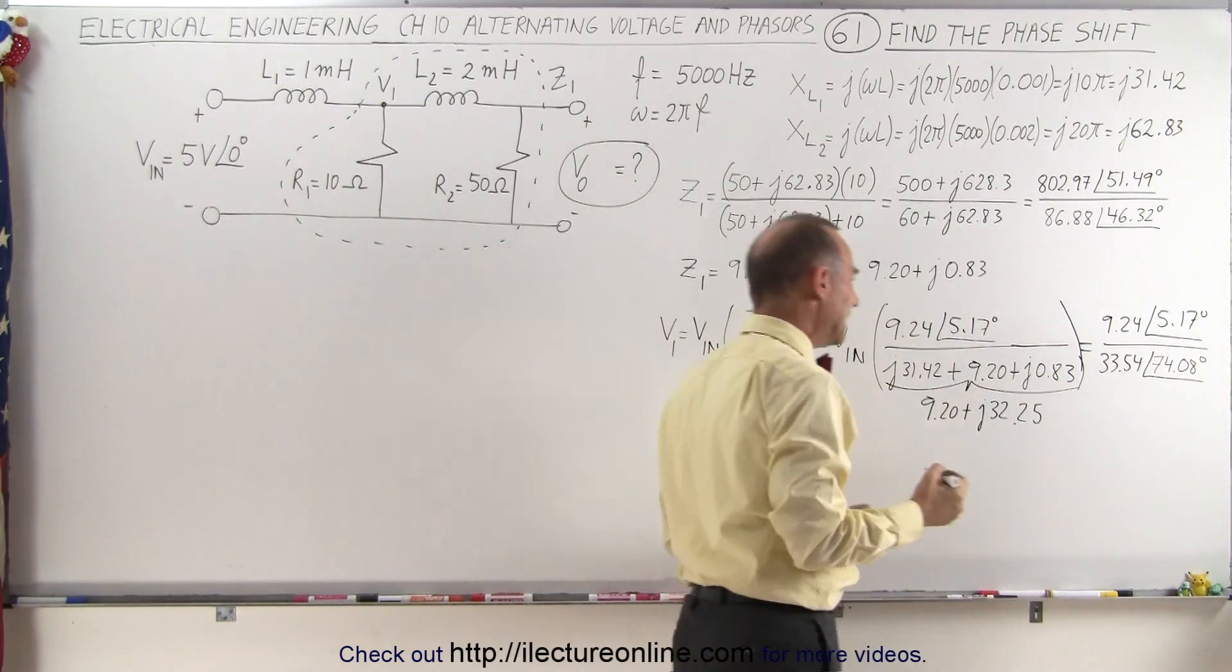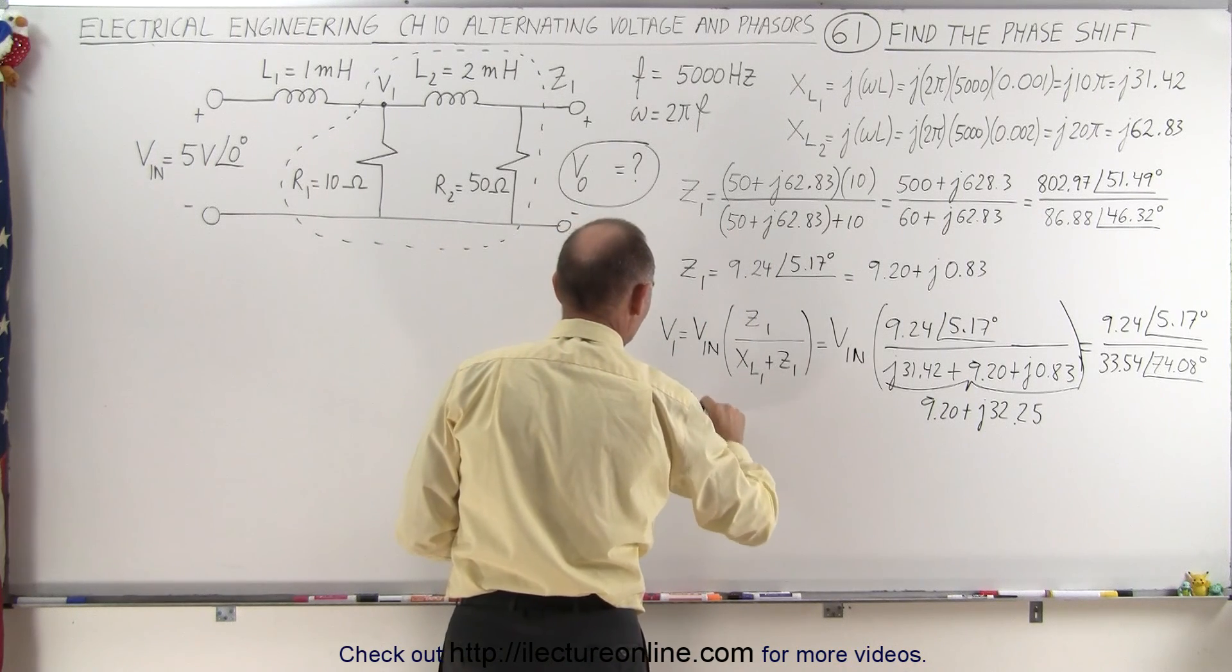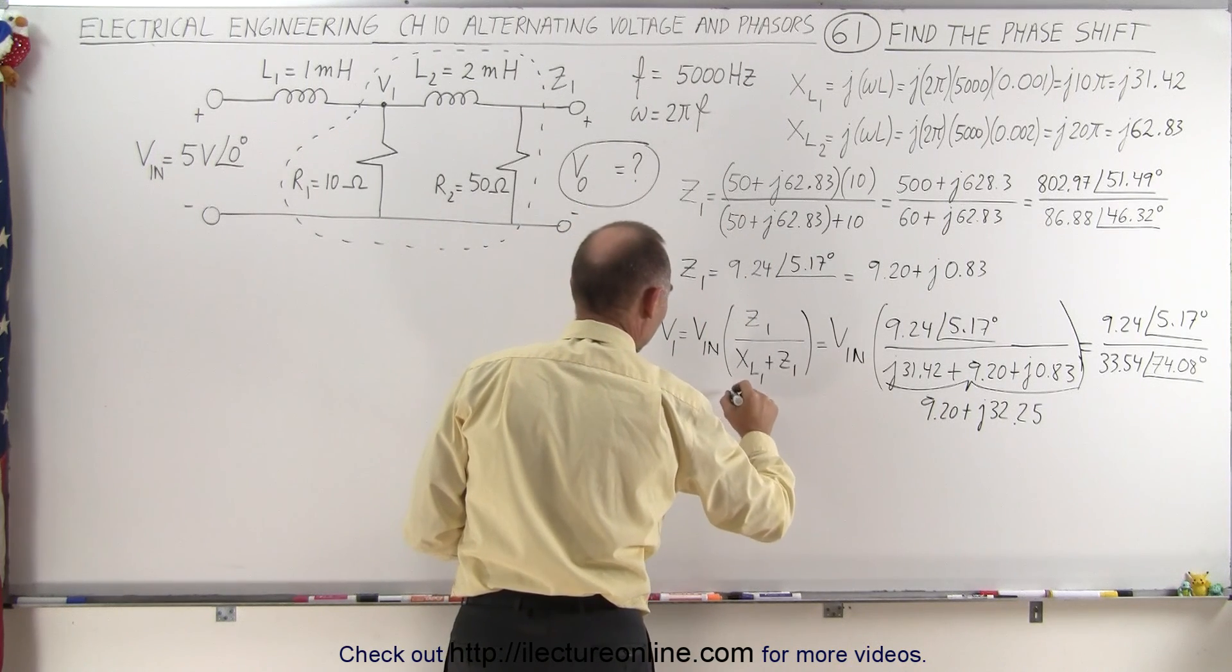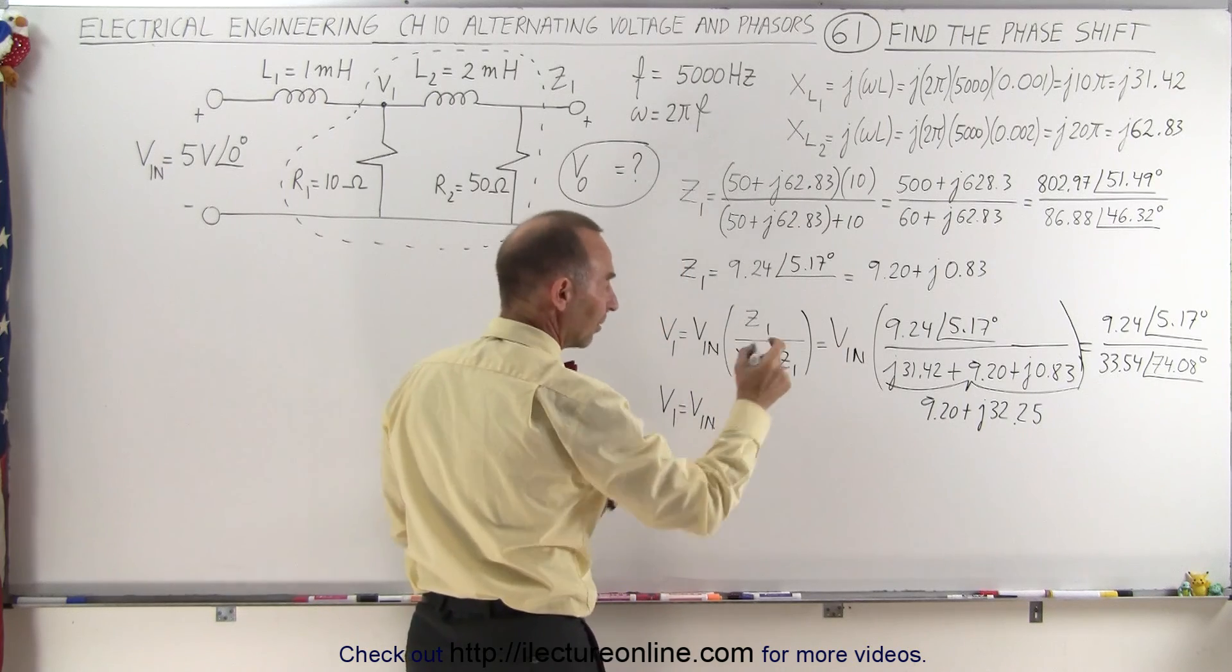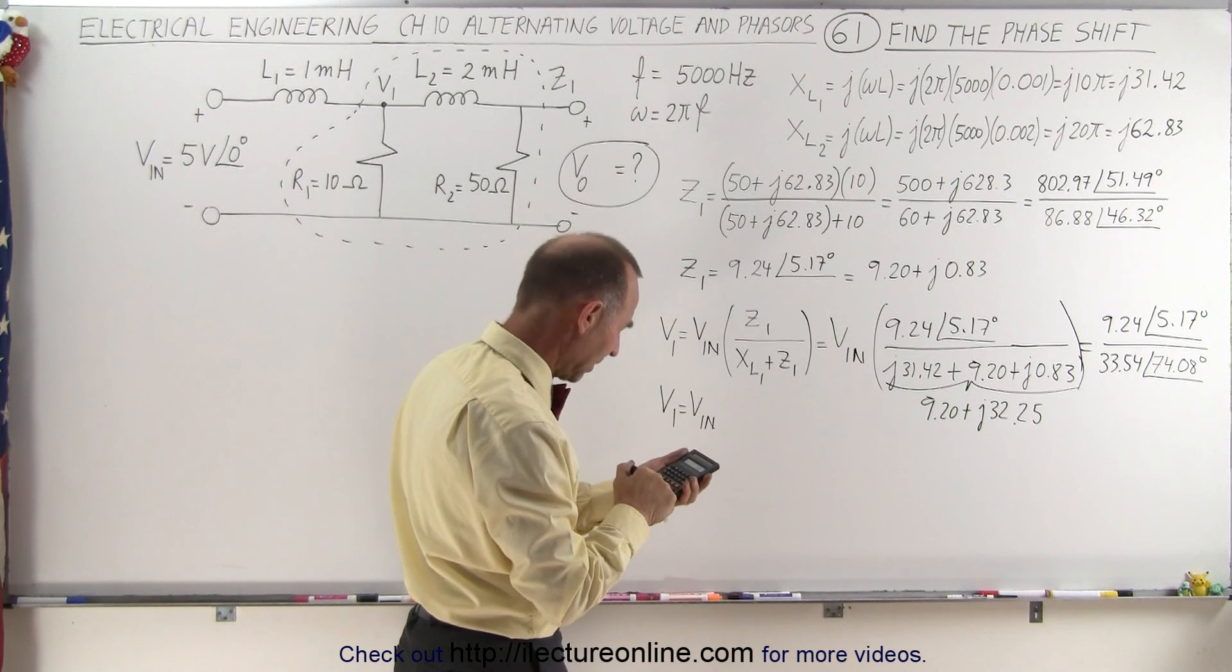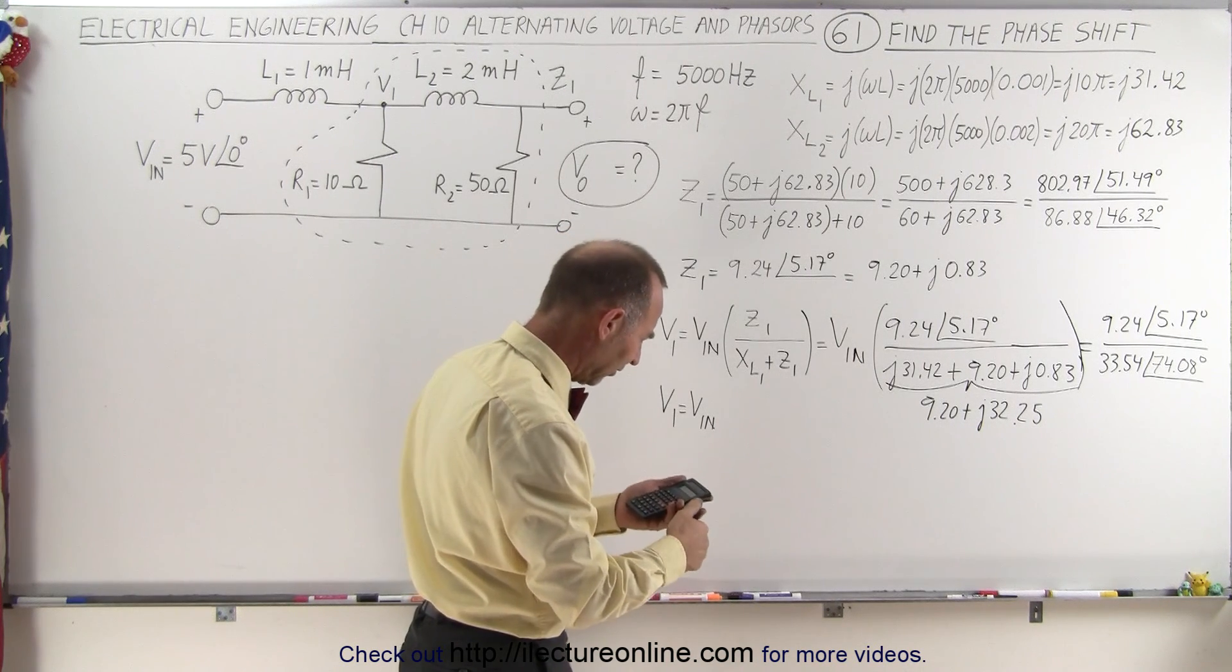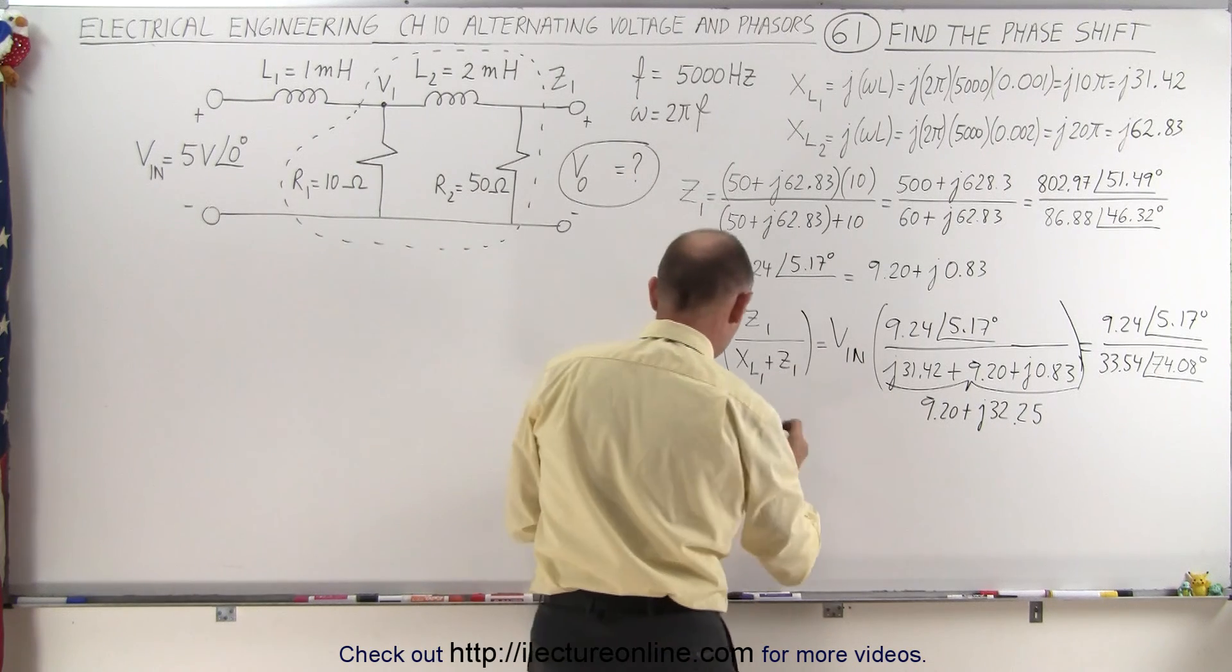You can already see we're going to have a negative phase angle here for V1. V1 equals Vin times, we have to calculate that. 9.24 divided by 33.54 equals 0.275.